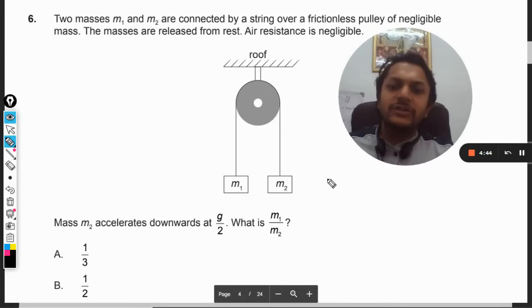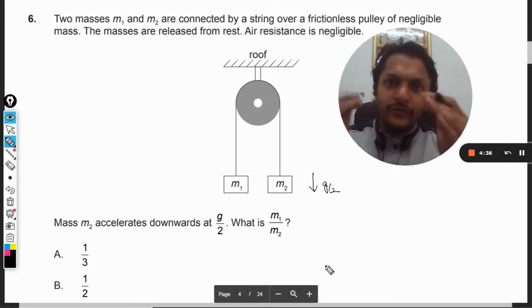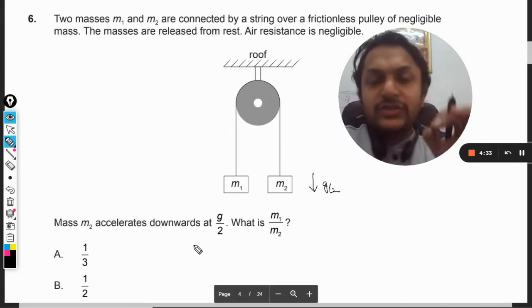The mass m2 accelerates downward at g/2. So this mass is going downward with an acceleration of g/2. What is the ratio of m1 to m2?